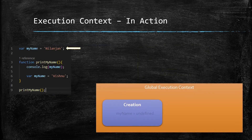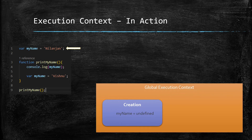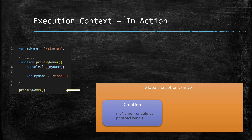When JavaScript engine starts looking at this code, a global execution context is created. In the creation phase of this execution context, variables and functions get their own memory allocated. Variables, apart from getting memory allocated, also get 'undefined' assigned as a value. Functions also get their memory allocated. Nothing happens on line nine yet because it's the creation phase.